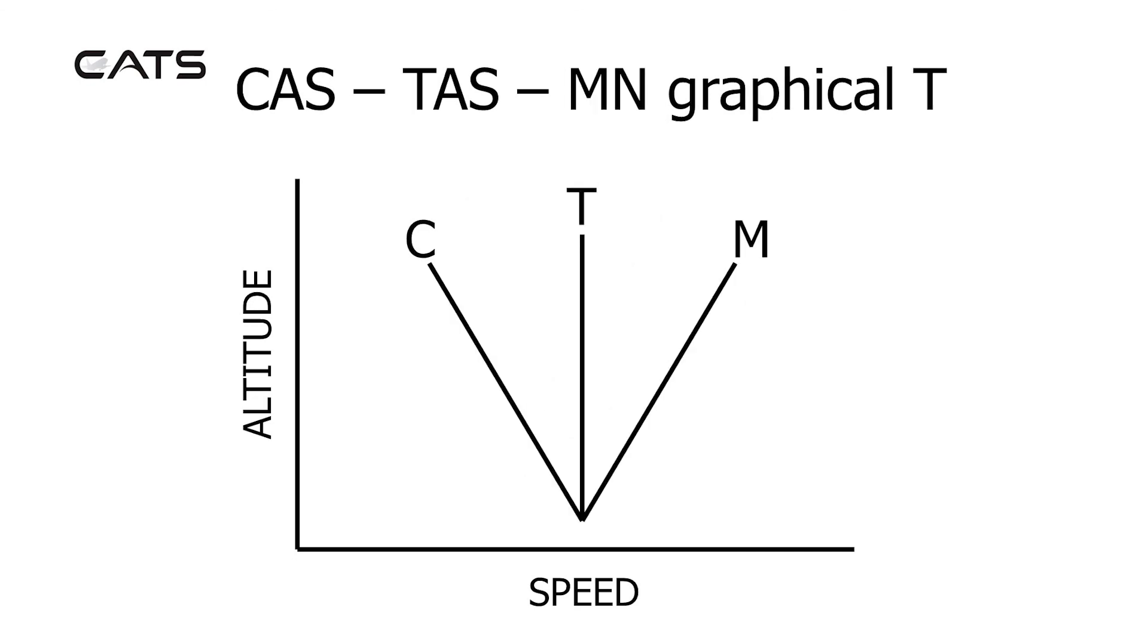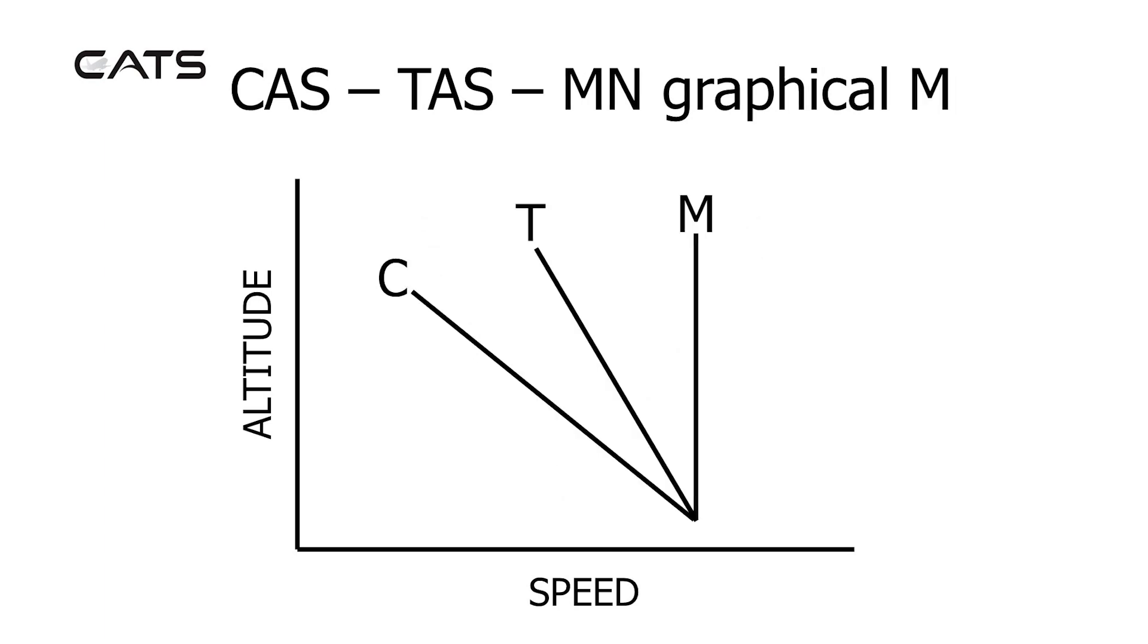If you were to climb at a constant true airspeed, calibrated airspeed would decrease and Mach number would increase. And lastly, if you were to climb at a constant Mach number, true airspeed would decrease and calibrated airspeed would decrease at a greater rate.